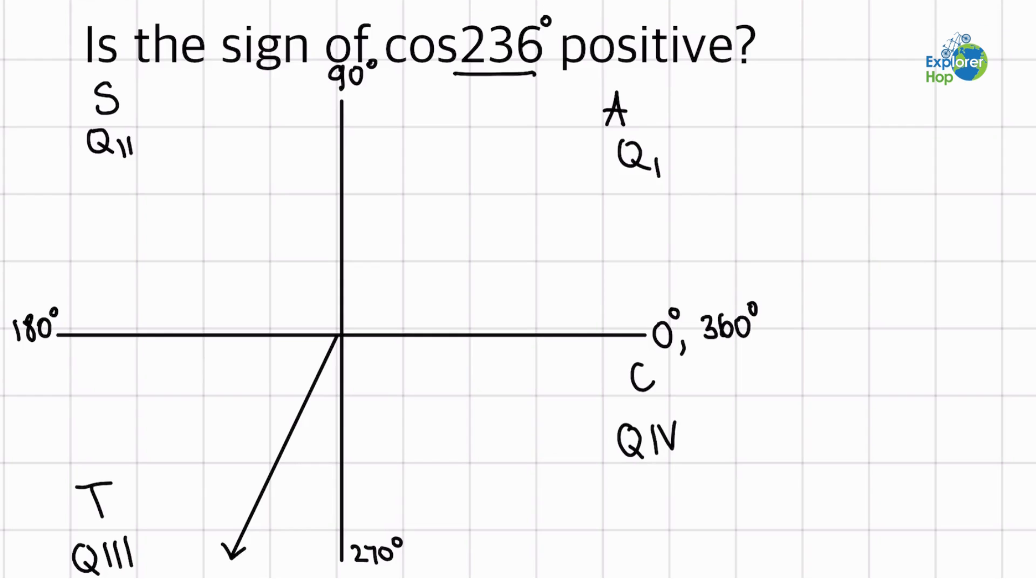And now let's look at what trigonometric ratio we were looking for. So we're looking for cos in this situation. And because this angle, the cos of this angle, is in a quadrant that isn't where the cosine ratio is positive, which is in quadrant 4, instead it's in quadrant 3, so therefore it is not positive.